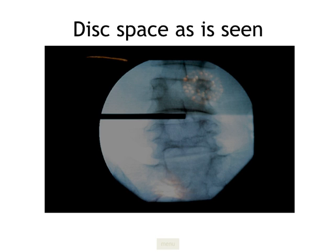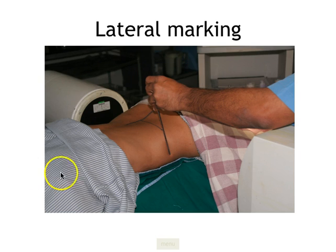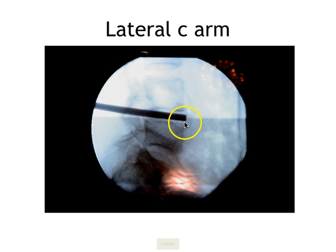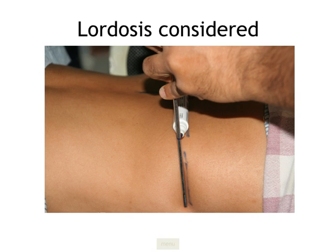Then we put the marker on the disc space as we see it. We are aware that the patient has a lumbar lordosis and therefore the disc space is tilted towards the head, but we mark the disc space as seen and make a marking on the back of the patient. Then we put the marker on the lateral aspect with the tip to the front of the disc and observe the inclination. It is almost parallel to the end plate, tilted towards the head — not exactly vertical. This lordosis inclination is marked on the skin.